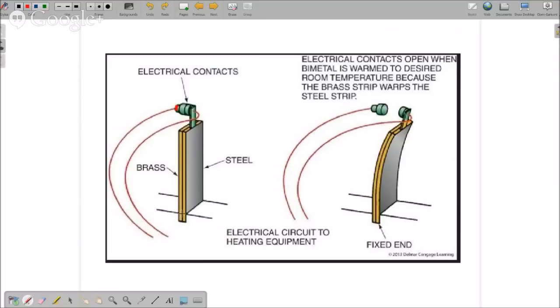And we have a bimetal strip that's fixed on one side. And what happens when you have two different types of metals, they expand at different rates based on temperature. So when the temperature changes from its designed closed contact position and temperature, as the temperature changes, let's say it's warmed up and it's getting hotter and hotter. This bimetal strip begins to warp.